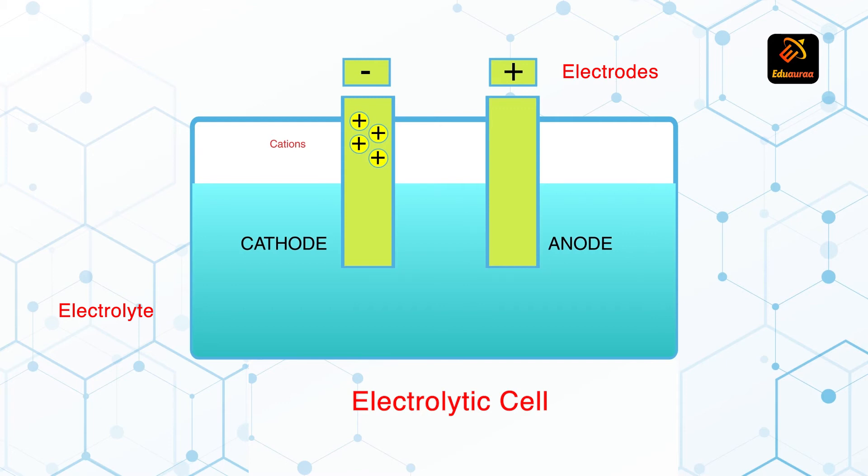So who goes to the cathode? Cations. Then who goes to the anode? Anions. What charge do anions have? Negative charge.